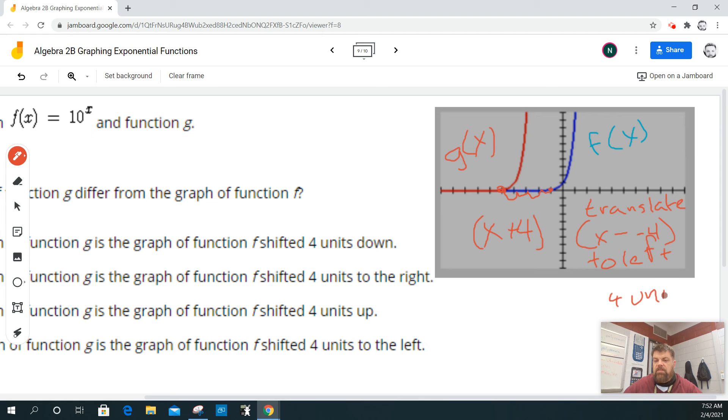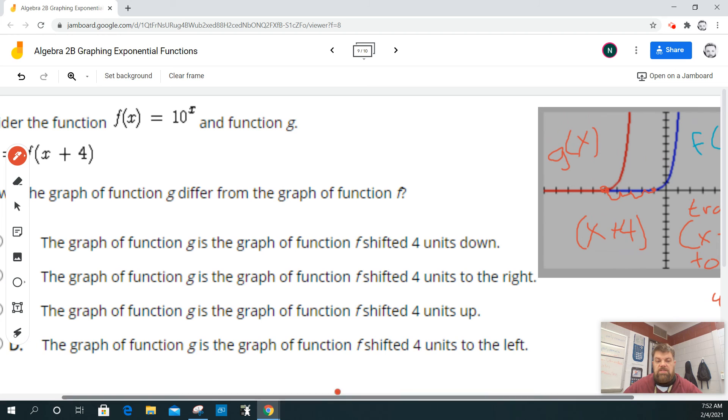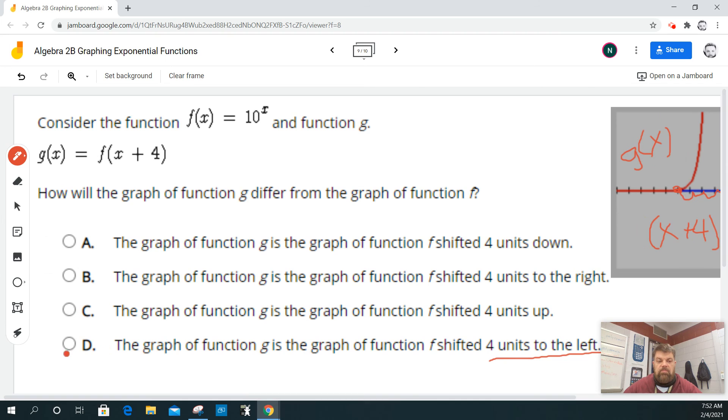4 units. Other than that, that's basically it. So it says the graph is shifted four units to the left, so it's just D. That's it.